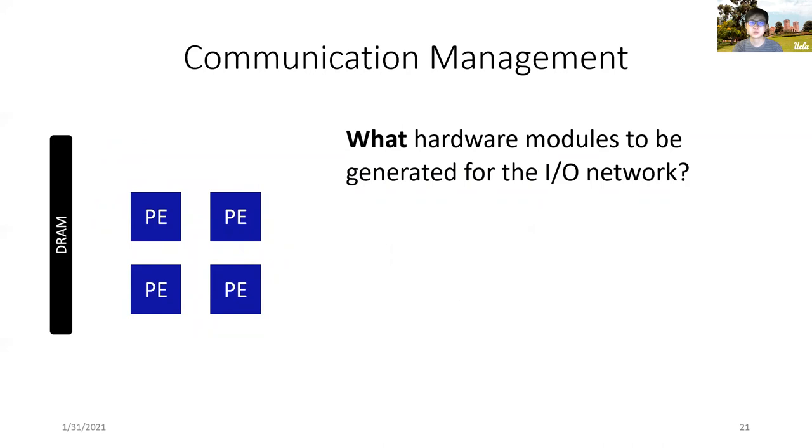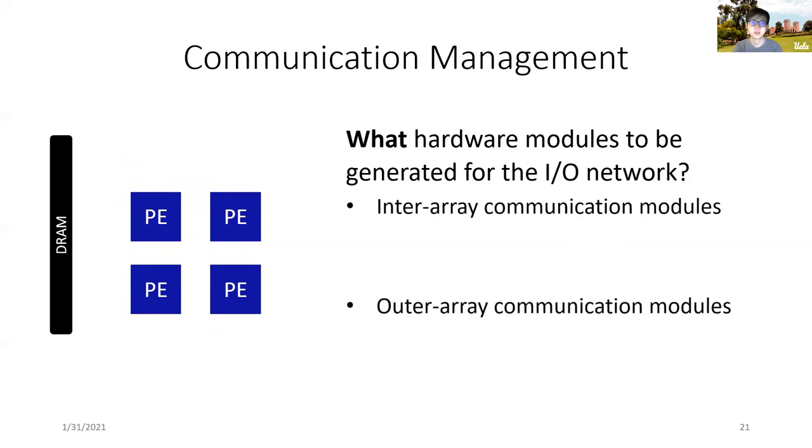For the first question, after studying the manual design, we group the hardware modules in the I/O network into two categories: inter-array communication modules, which handle the data transfer between PEs, and outer-array communication modules, which handle the data transfer between PEs and external memory.